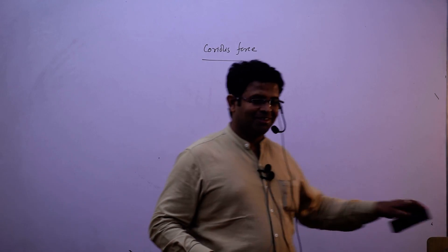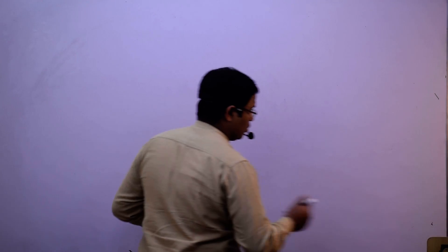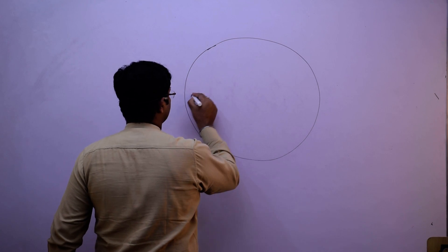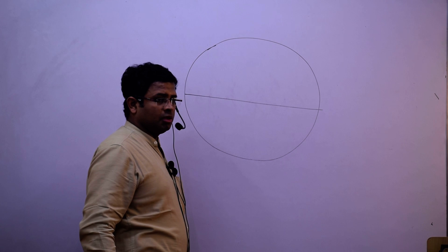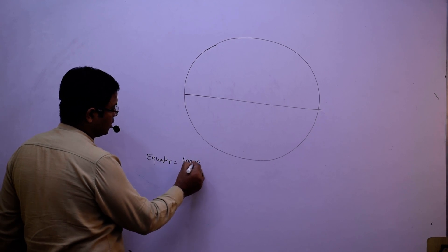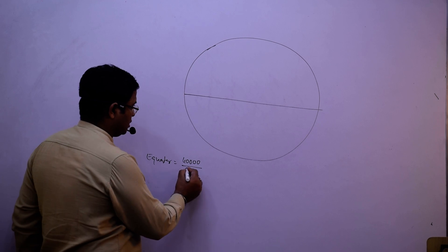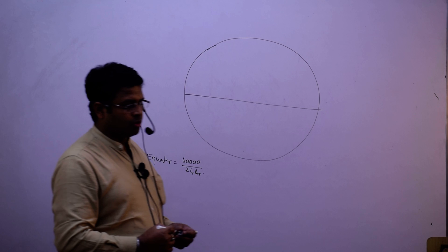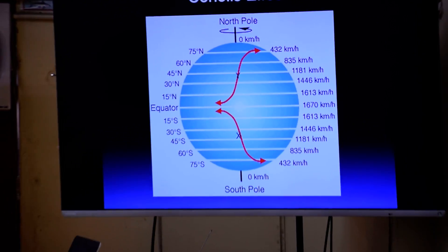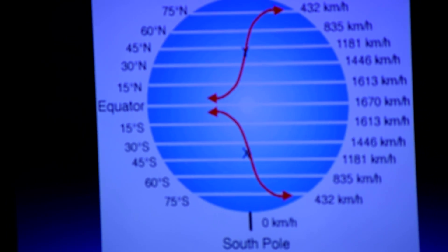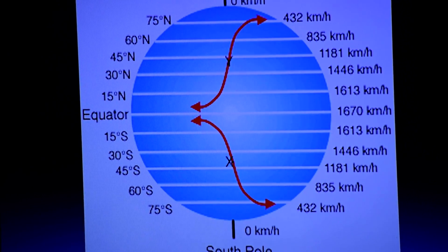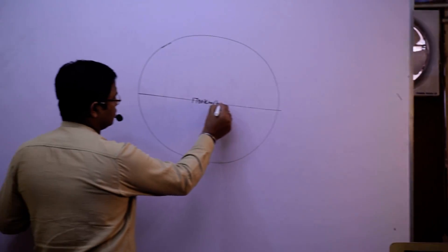If I talk about our Earth, this is the equator, and the equator circumference is 40,000 kilometers. What is the speed of the circumference? It takes 24 hours to rotate. So 40,000 divided by 24 gives around 1670 kilometers per hour. That is the speed of any object on the equator — approximately 1700 kilometers per hour.